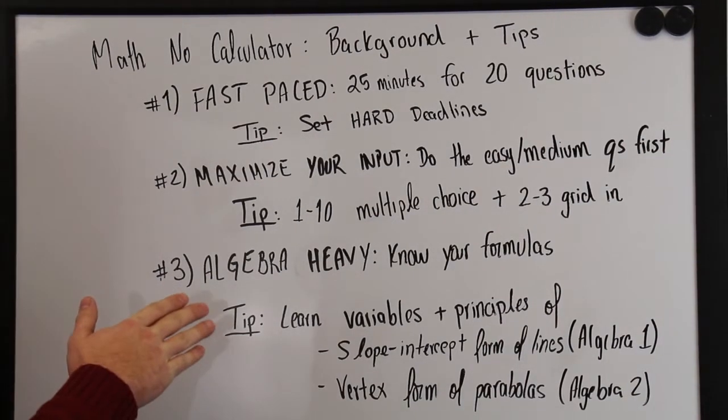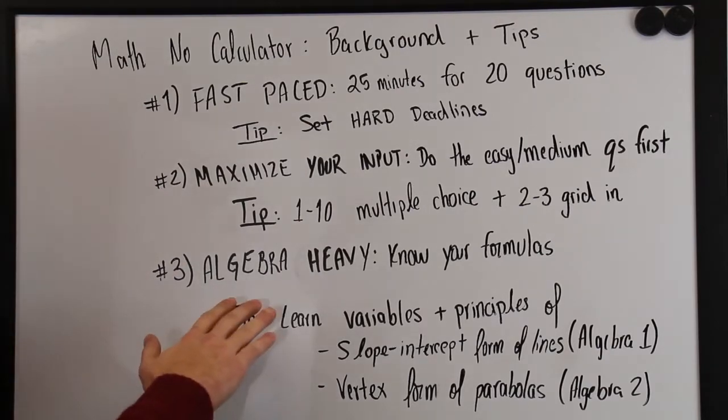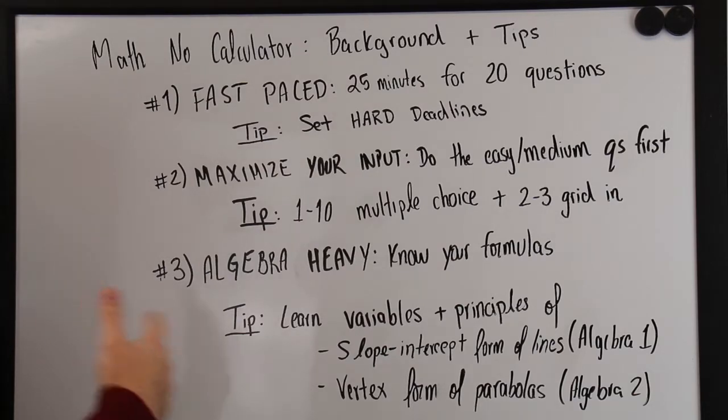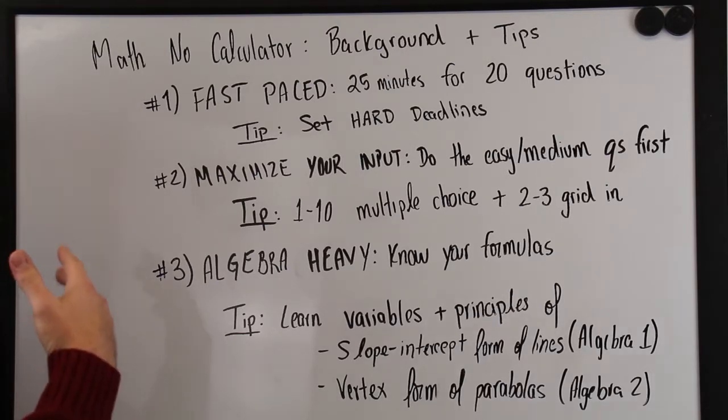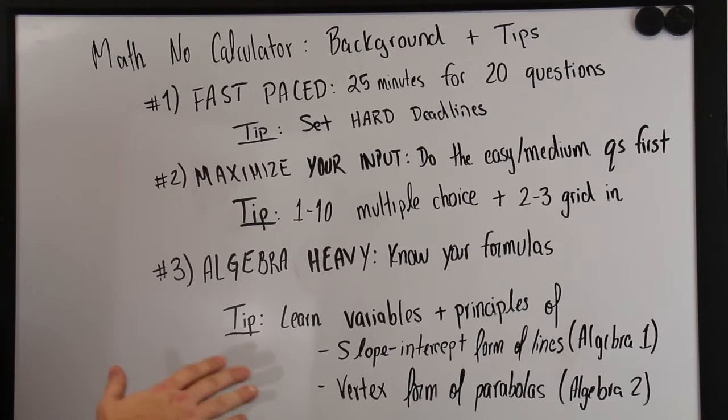So the next big tip in this section has to do with the content in this section. It is a very algebra heavy section. What that means is that you're going to be wanting to do a lot of simplification before you do any complex arithmetic. So resorting to things like substitution, elimination, knowing how to add, subtract, multiply, divide, and combine expressions is going to be very important.